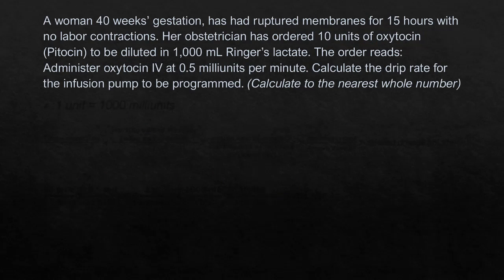A woman 40 weeks gestation has had ruptured membranes for 15 hours with no labor contractions. Her obstetrician has ordered 10 units of oxytocin to be diluted in 1,000 milliliters of lactated ringers. The order reads: administer oxytocin IV at 0.5 milli-units per minute. Calculate the drip rate for the infusion pump to be programmed — to the nearest whole number. We will not only have to do a conversion with units, but also a time conversion because we're starting in minutes and need to end in hours. The question is asking us for milliliters per hour, and right now we are in milli-units per minute. I like to start with my time conversion first.